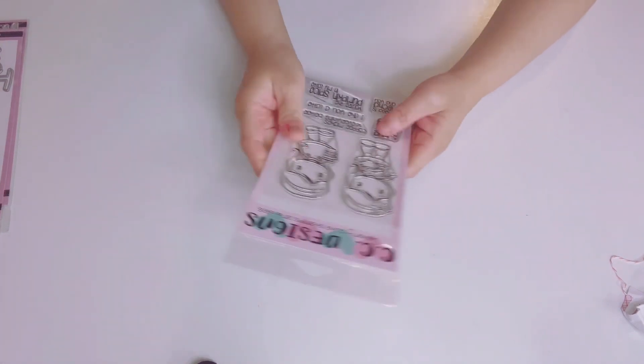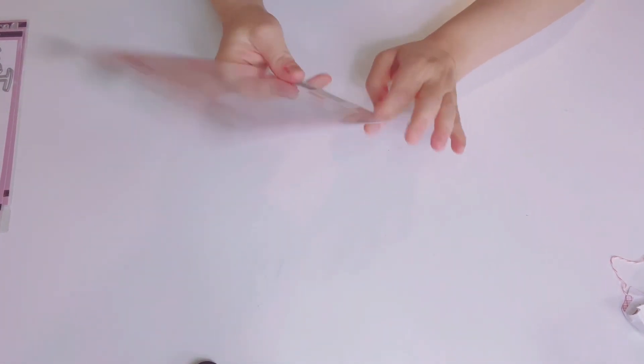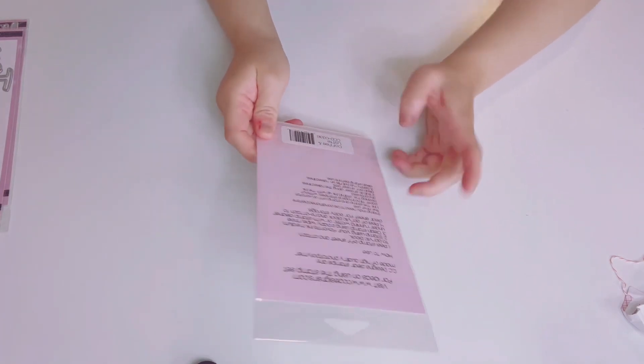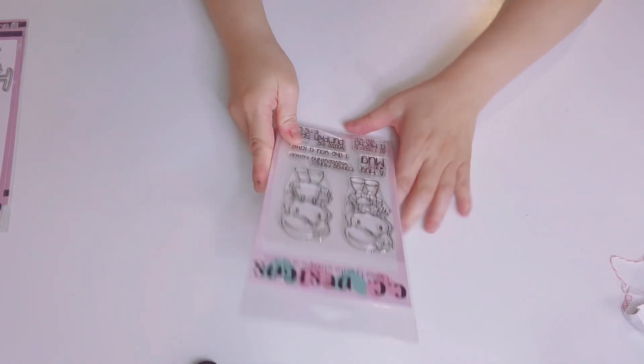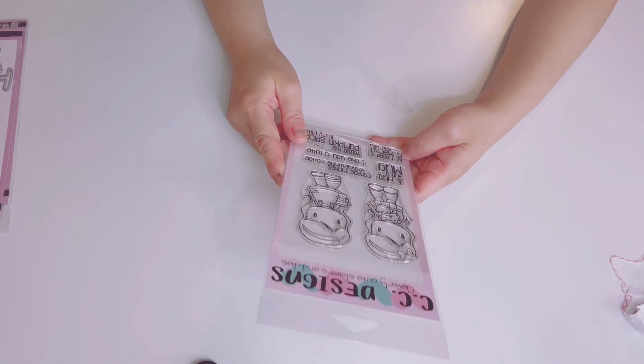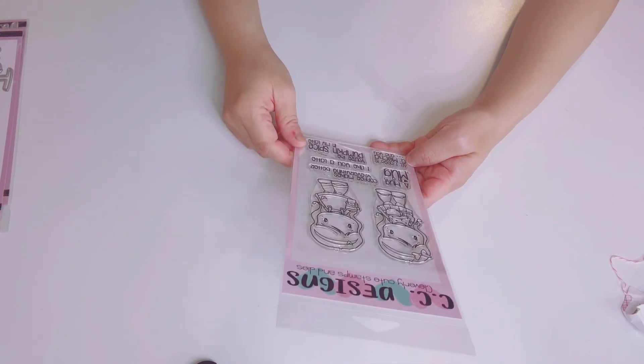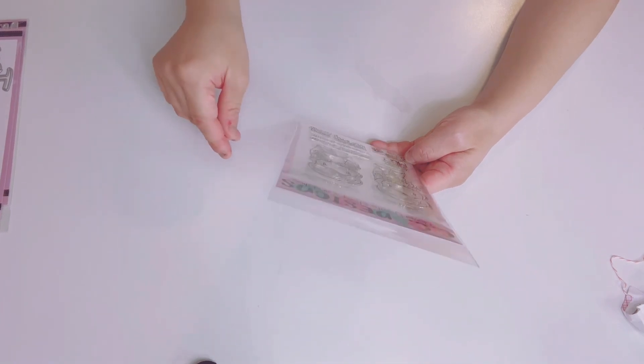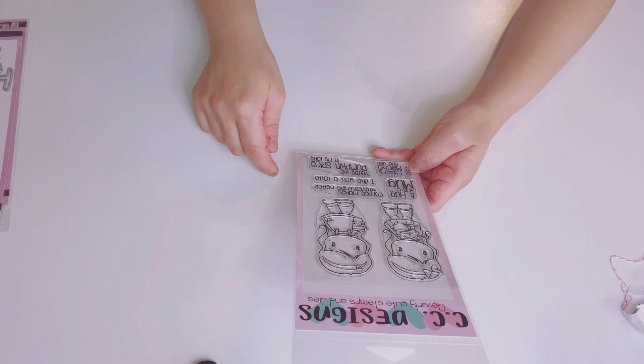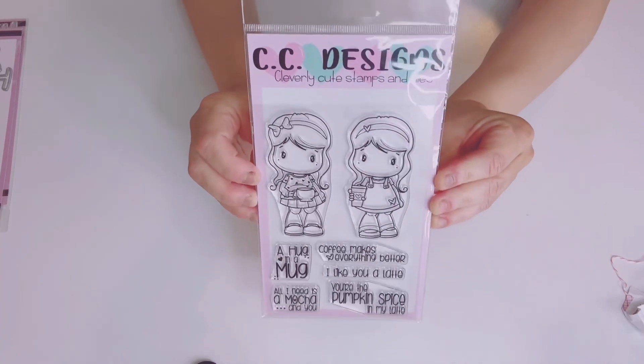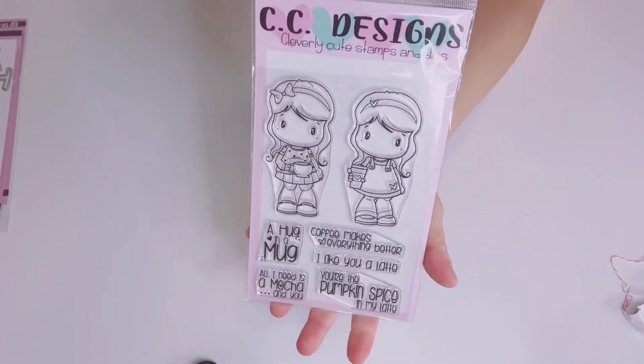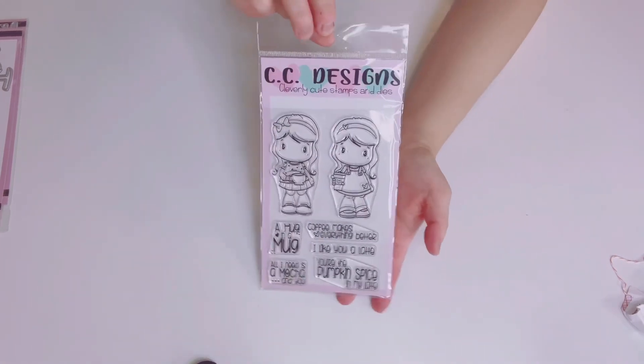So this is the only stamp set, and this is a new one. They did not have the dies. And I was like, oh man, maybe they will come out with their dies. Not sure, but it's called Coffee and Latte. The girls are so cute. It says a hug in a mug, all I need is a mocha and you. Coffee makes everything better with the heart. And then I'll let you a latte, you're a pumpkin spice in my latte. One is holding a cup and one is holding a tumbler. Isn't that precious guys? It's going to be so much fun to color. So that's my first one. This is the only one that didn't come with the dies.